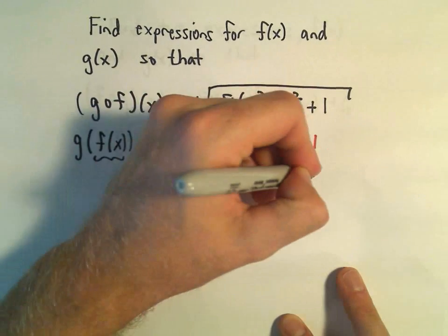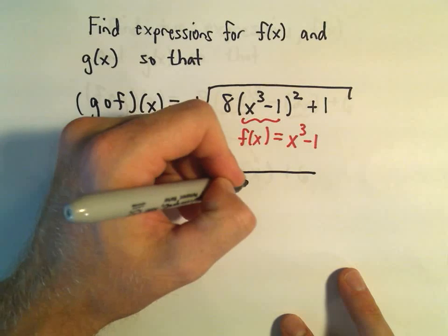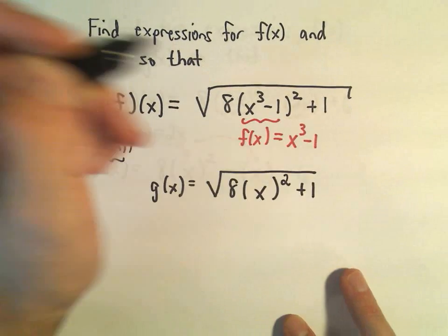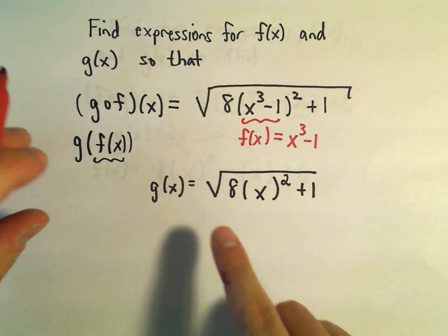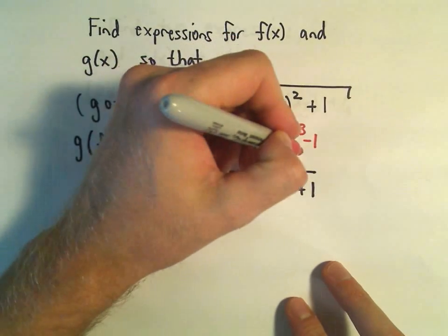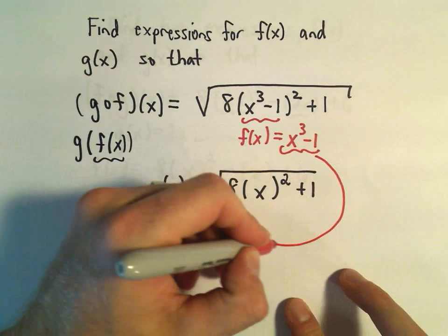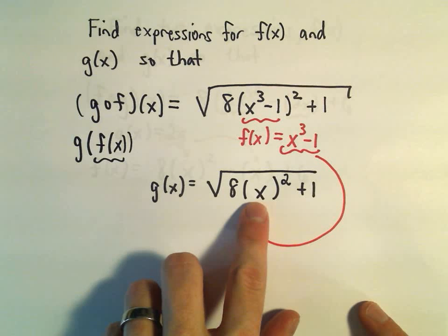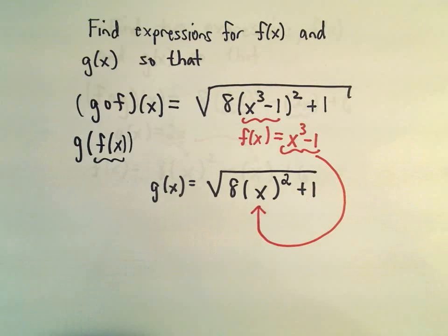It's getting squared, and we're adding 1 to it. So I claim that if we let g(x) equal the square root of 8x² + 1, again, notice if we plug in f(x), the only place we would plug it in would be inside the parentheses. And then we would get 8(x³ - 1)² + 1. Okay, one last one here.